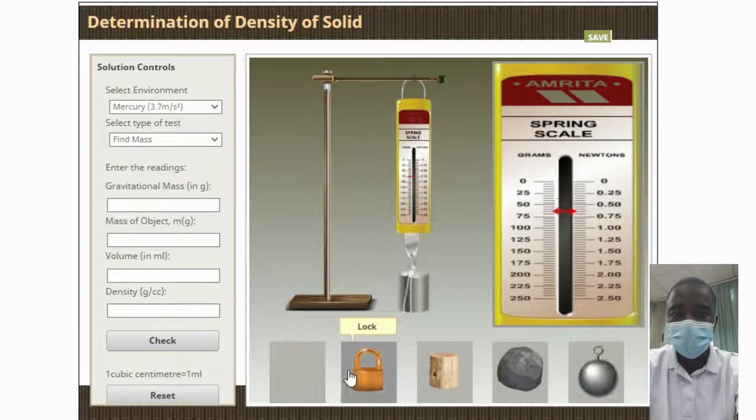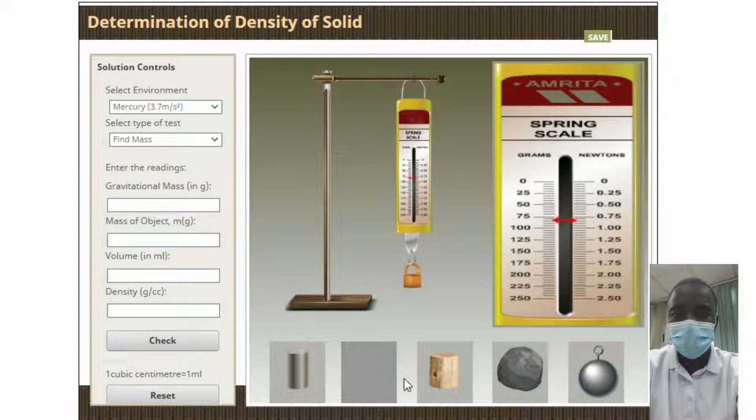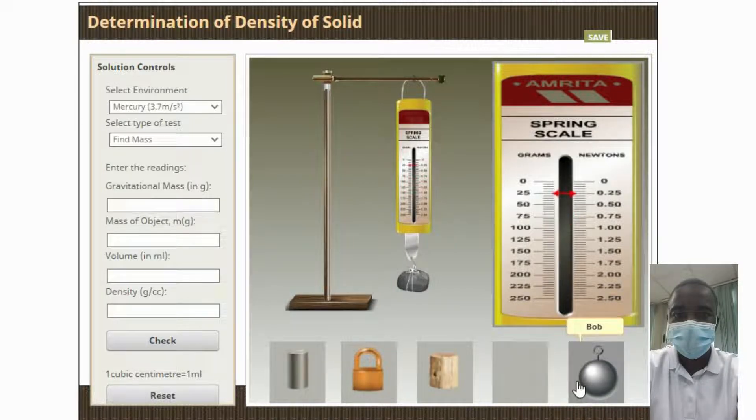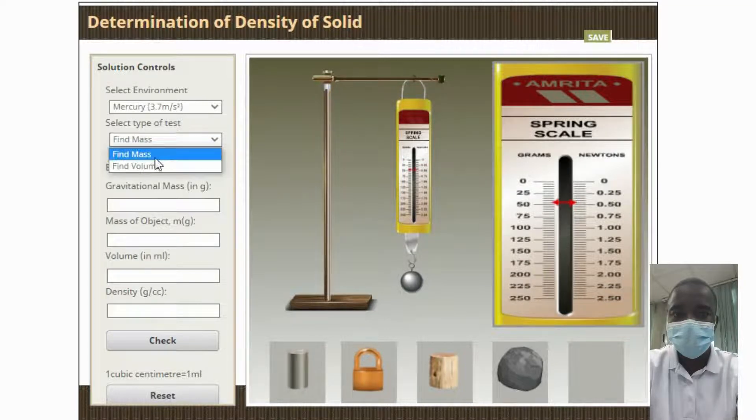Density is also an important concept when considering the mass and volume of an object. An object with a large mass but a small volume will have a high density. An object with a large volume but a small mass will have a low density.